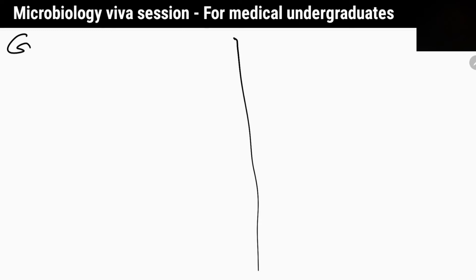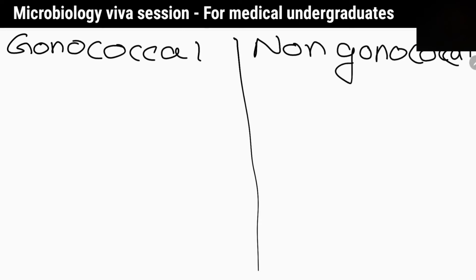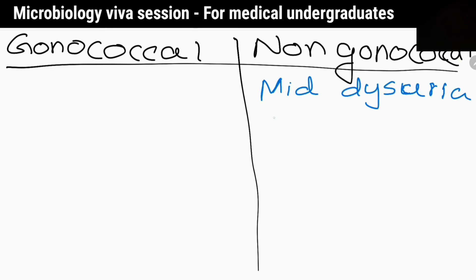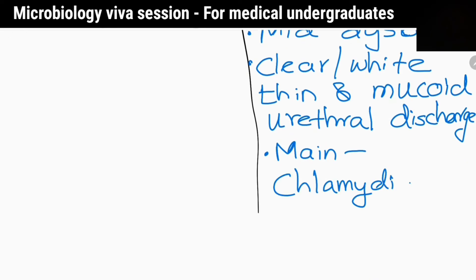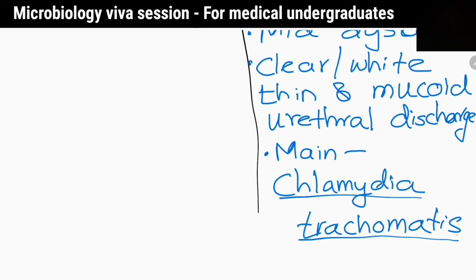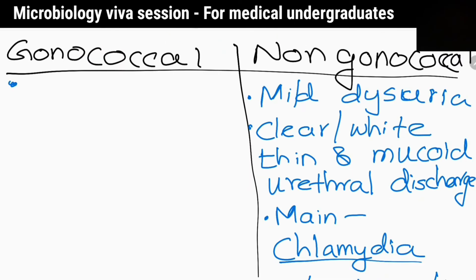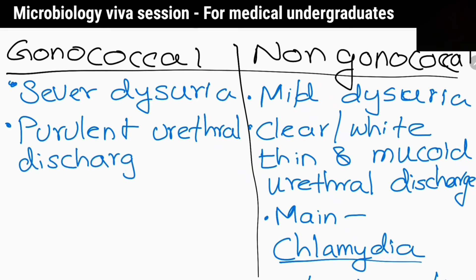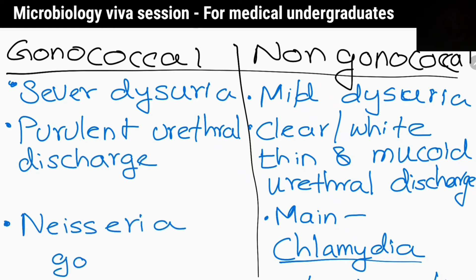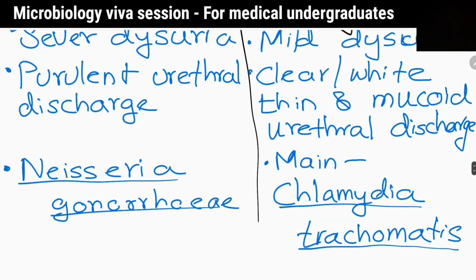What are the differences between gonococcal and non-gonococcal urethritis? Non-gonococcal urethritis is characterized by mild dysuria and clear or white mucoid urethral discharge; the main causative agent is Chlamydia trachomatis. Gonococcal urethritis is characterized by severe dysuria and purulent urethral discharge; it is caused by Neisseria gonorrhoeae.